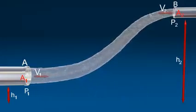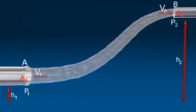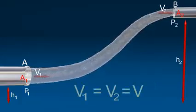Now, the work done per second on the liquid at section A and at section B. V1 equals V2 equals V.